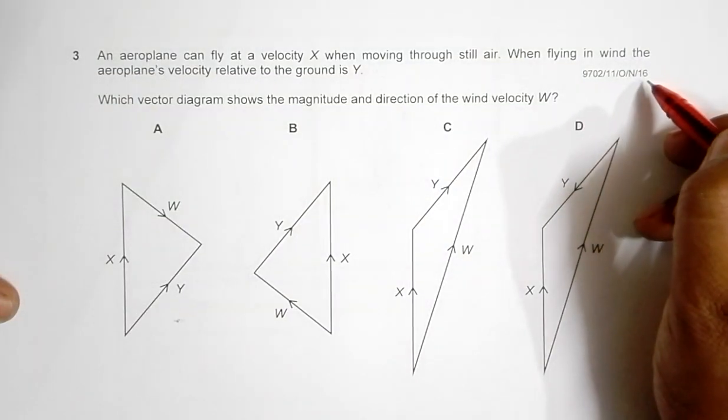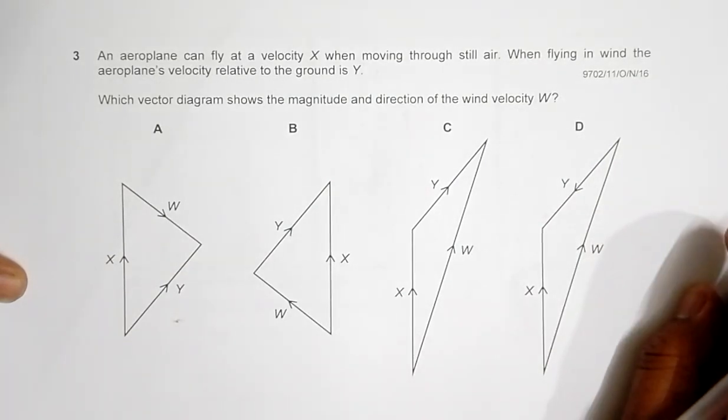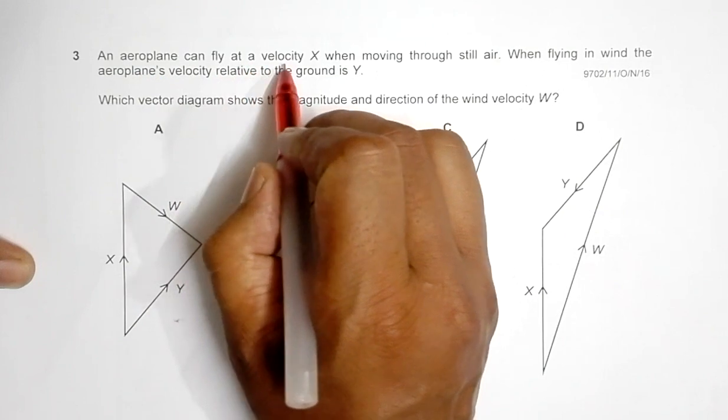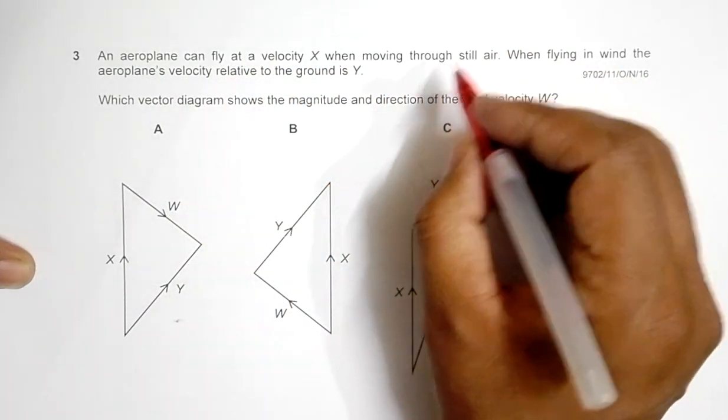Hello folks, this is 2016 October paper 1, question number 3. It's concerned with vectors. An aeroplane can fly at a velocity x when moving through still air, so velocity of aeroplane is x.